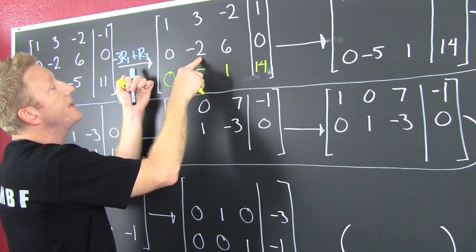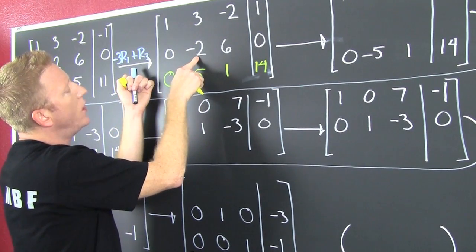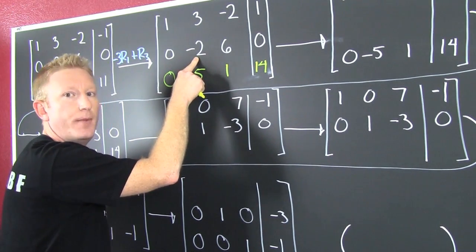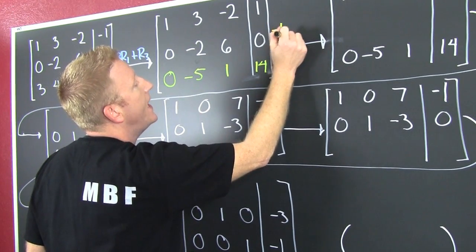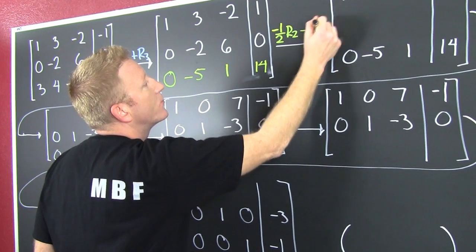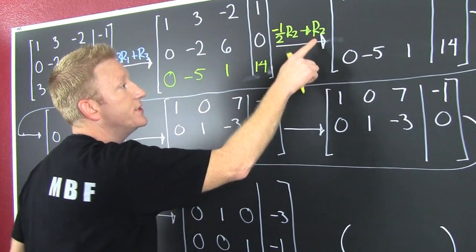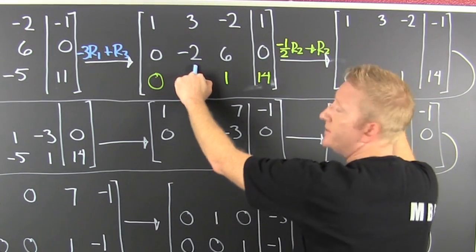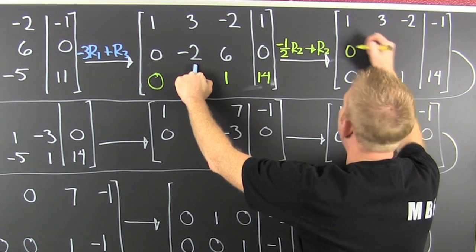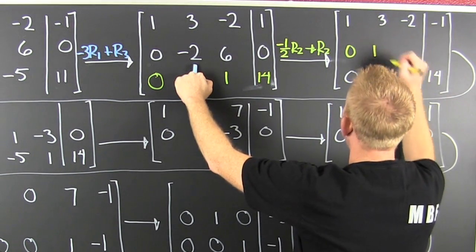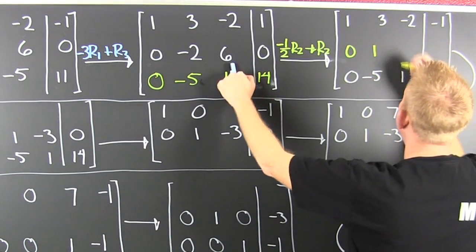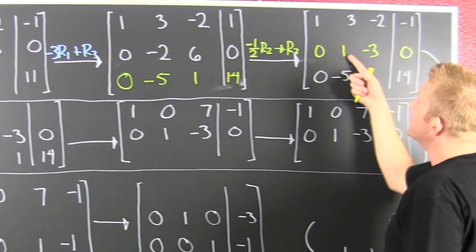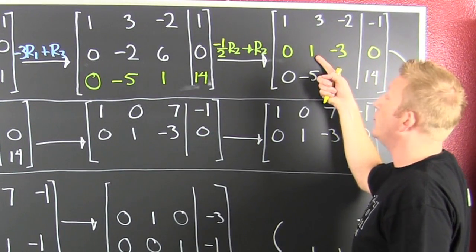Step 3: I need to get a 1 in row 2, column 2. You're going to divide by minus 2, so this is minus 1 half times row 2, put back in row 2. The only row that is changing is row 2, so I rewrite both other rows. One half of 0 is 0; one half of minus 2 is 1 — the desired effect. Minus 1 half of 6 is minus 3. Now I have a 1 in row 2, column 2.